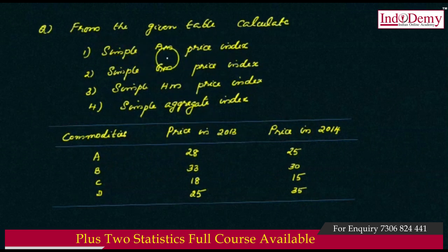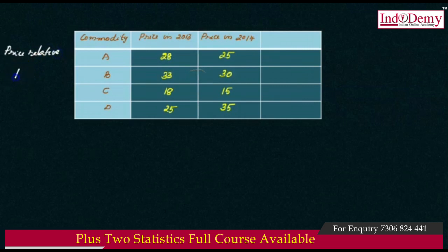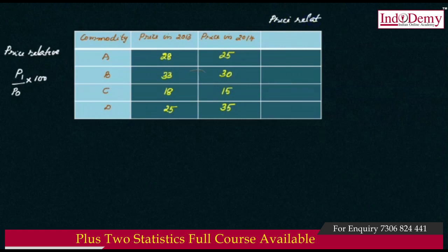We have a simple arithmetic price index number, and we have a price relative. Price relative is equal to P1 divided by P0 into 100. Now let's calculate the price of the current year. 2014 is the current year and 2013 will be the base year.